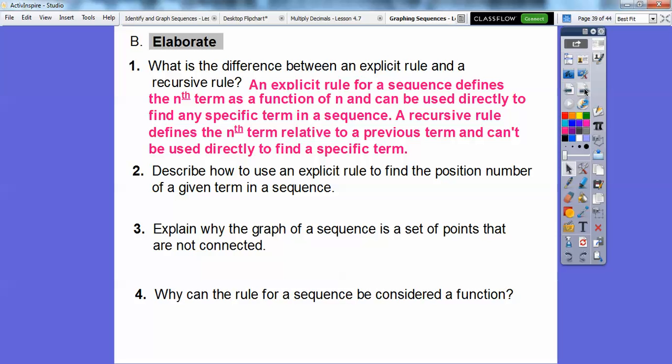Number two, describe how to use an explicit rule to find the position number of a given term in a sequence. Well, if they give you a given term in a sequence, like say they say a term of a sequence is 125, do you remember doing that? You just plug that number in, you substitute it in for your f(n), because it said f(n) equals some formula, and then so you substitute that number in and solve for n, and that'll tell you which position that was in. So I think it was our 41st position or something like that.